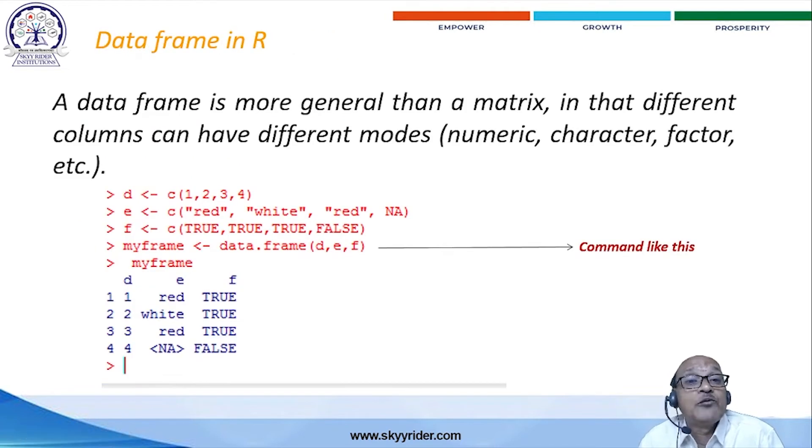The third one is the data frames. Data frames is very important. A data frame is more general than a matrix. It is a different column. It can have a different mode. Not only for the numbers, numeric, character factors are accepted. Whatever it is, it will be a single application. Like, B is one of the variables. C means to create the command, 1, 2, 3, 4, that means the verification.